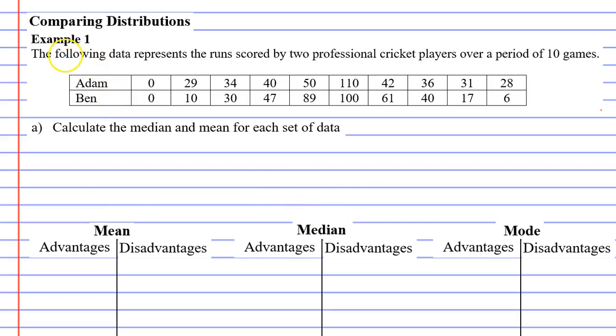In this example, the following data represents the runs scored by two professional cricket players over a period of 10 games. Here's Adam and Ben and the scores that they received. Question A says calculate the median and mean for each data set.